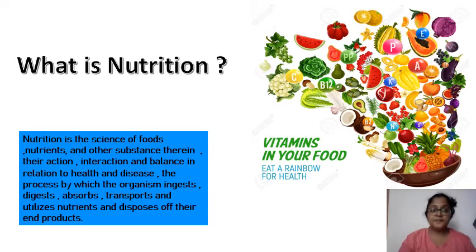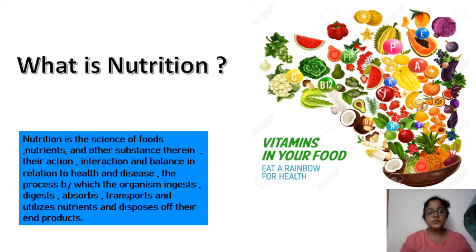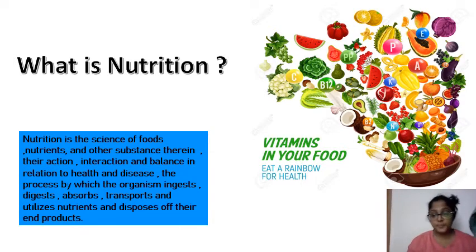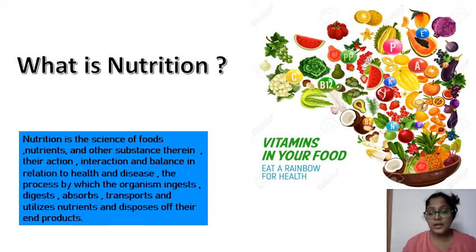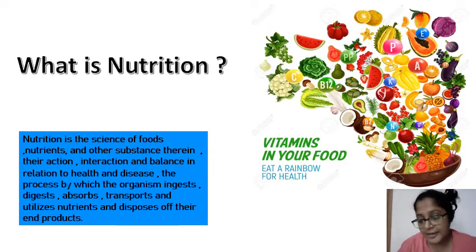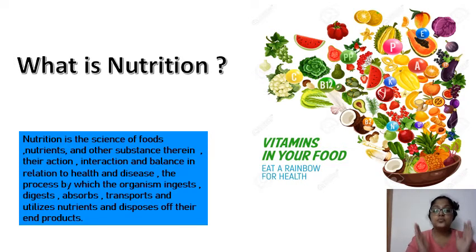Coming to the first definition: what is nutrition? It is basically a science of foods and other substances, their action, their balance, their process of digestion, absorption, metabolism, and the result of it is the production of the end products. As you can see, a bowl of food rich in different nutrients and the different actions they have in our diet. So nutrition is the science of food, and we also call nutrition as nutrition science.